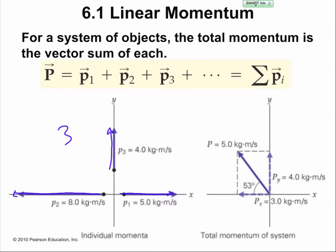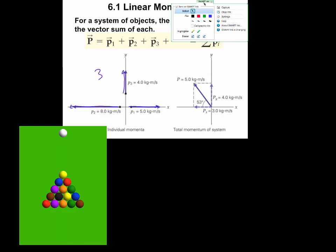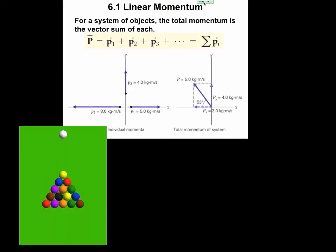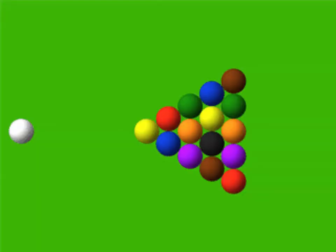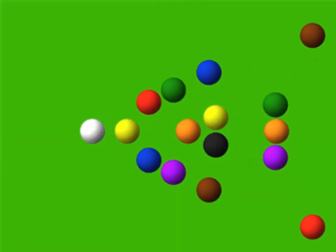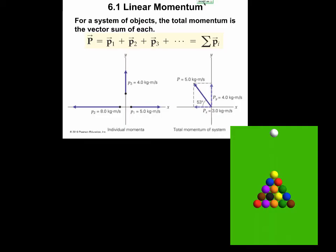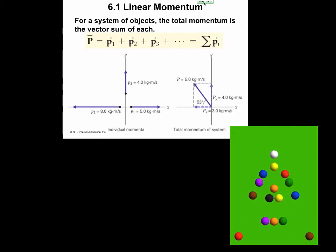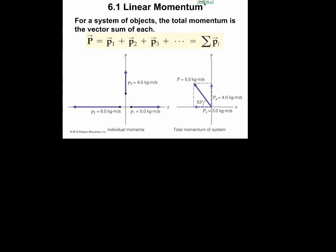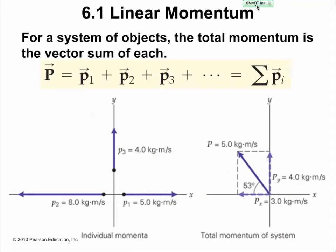This is important because when we talk about conservation of momentum — like when you play pool and you hit a pool ball with a cue ball — that momentum is conserved, and it's conserved with regards to the vector. It's like a transfer of momentum: when the cue ball hits another ball, that momentum is transferred from the cue ball to the other ball.